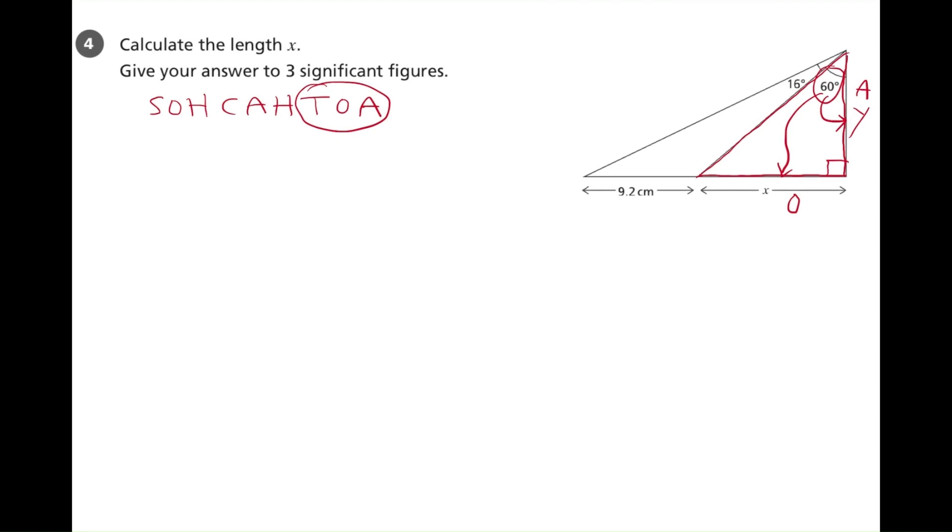So, we put the numbers in, and we have the tangent of 60 degrees equals the opposite side, which is x, divided by the adjacent side, which is y.